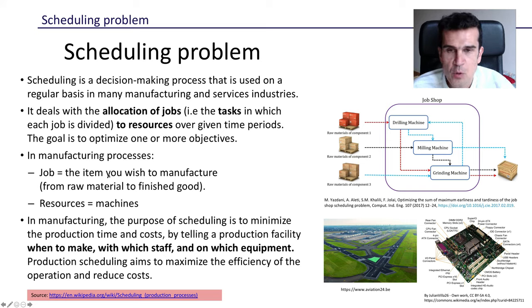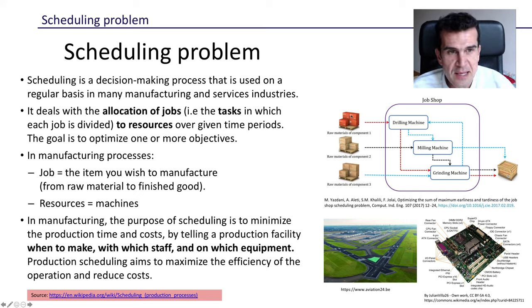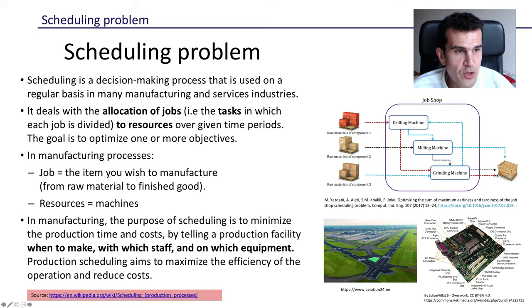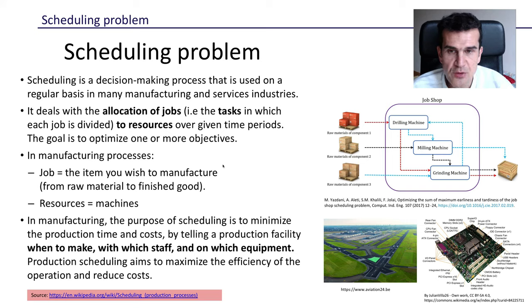In a manufacturing process, each job is an item we wish to manufacture. Imagine we have to manufacture three components — each component is a different job. The first component must be drilled and then ground. The second component must be milled first and then ground. The third component's tasks are: grind, then drill, then mill. Those are examples of jobs and their tasks.